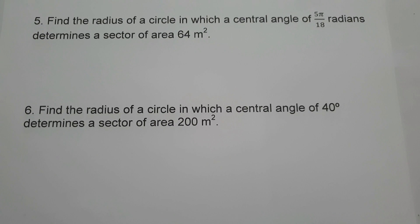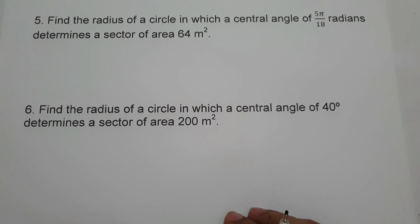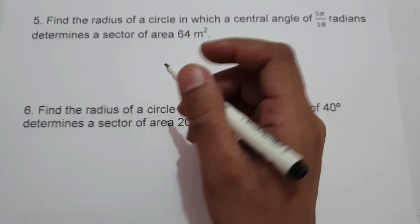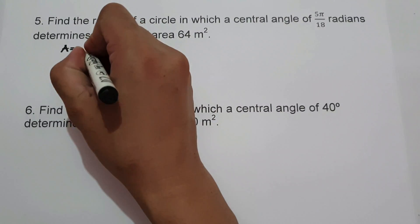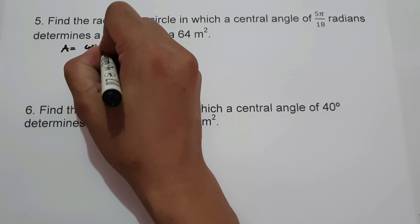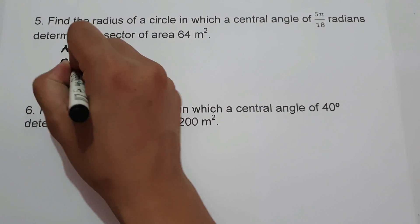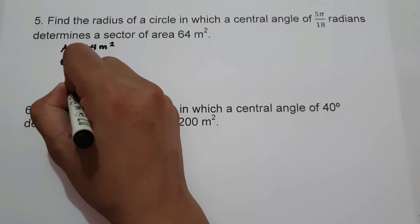On example number 5, find the radius of a circle in which a central angle of 5 pi over 18 radians determines a sector of area 64 meter square. On this problem, we are looking for the radius, given the central angle and the area of the sector. The given are: area is 64 meter square, central angle is 5 pi over 18, and we are looking for the radius.